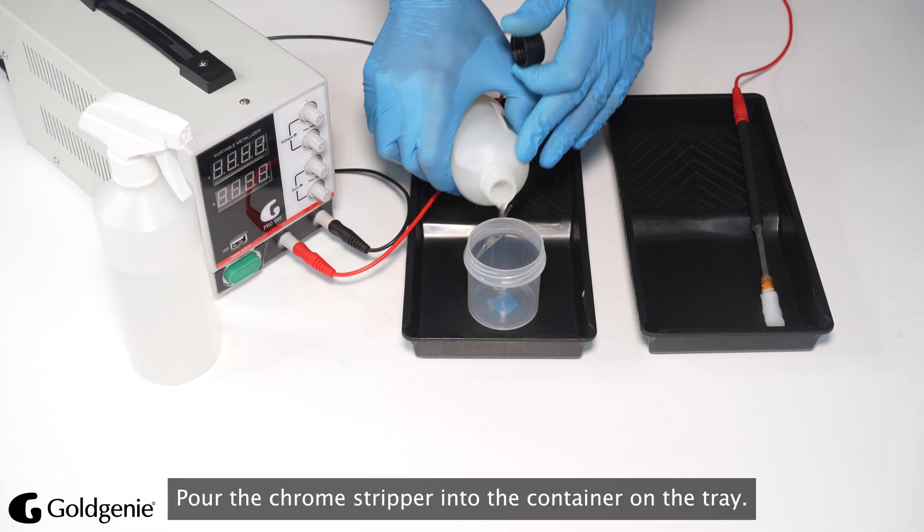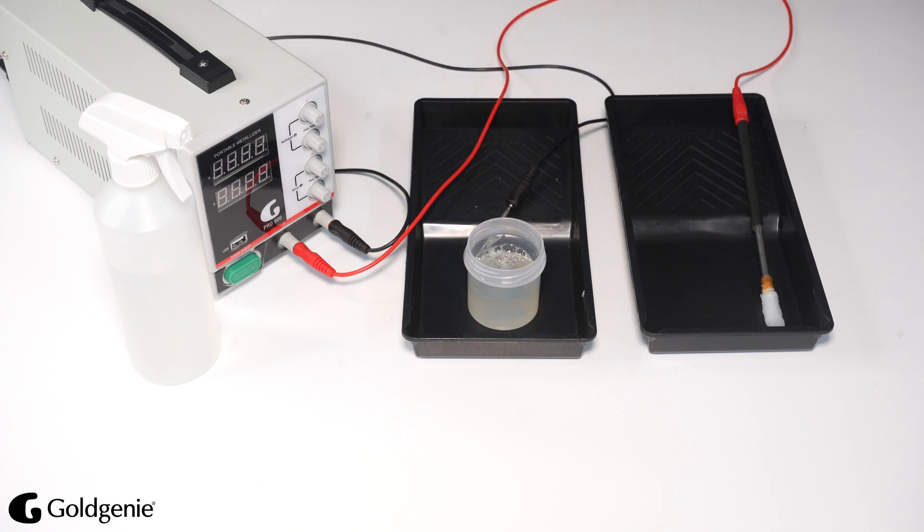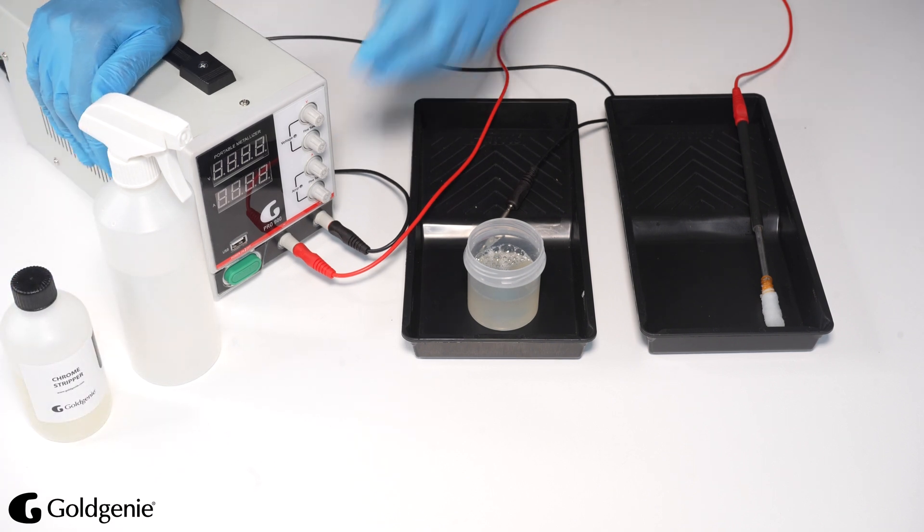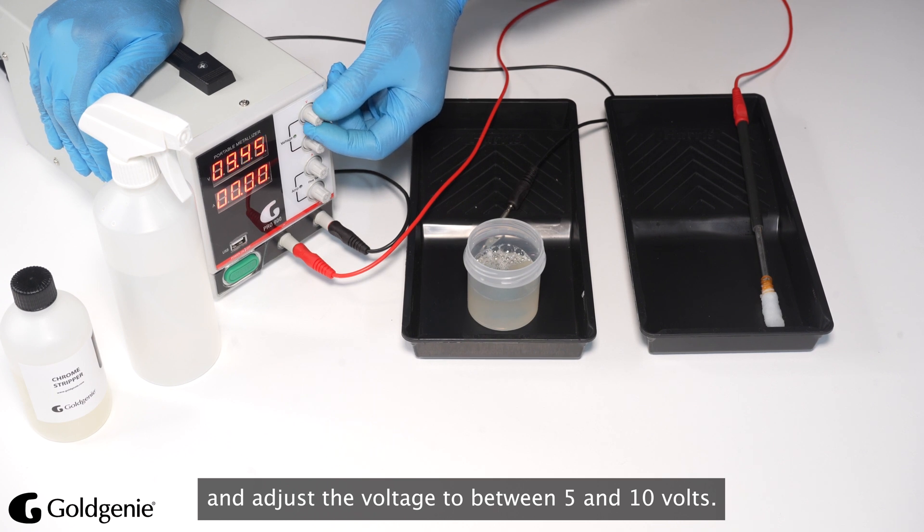Pour the chrome stripper into the container on the tray. Switch the machine on and adjust the voltage to between 5 and 10 volts.